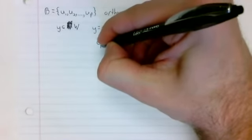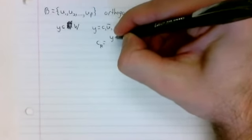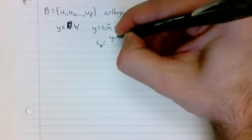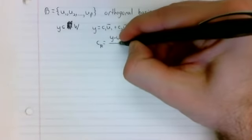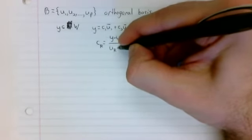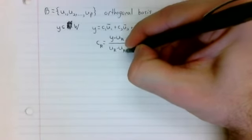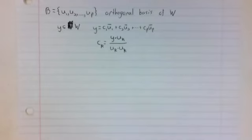C sub k is the dot product of y with u sub k divided by the dot product of u sub k with itself.